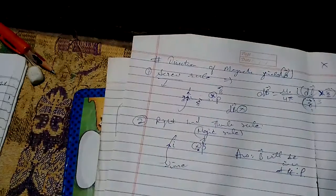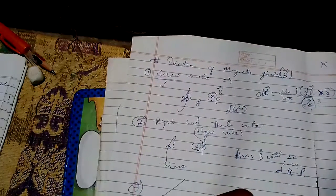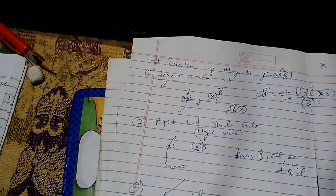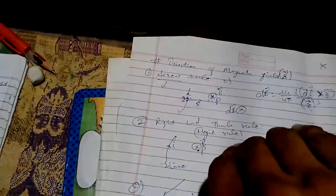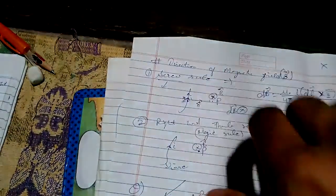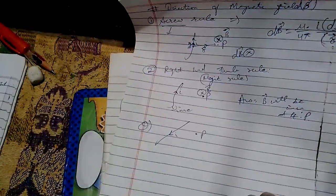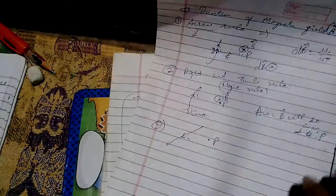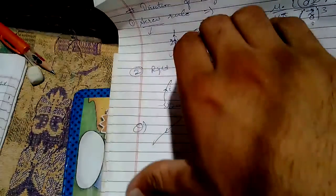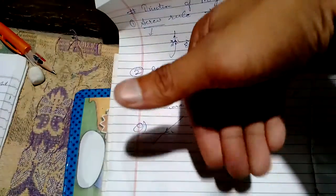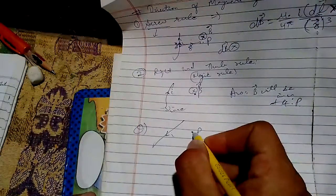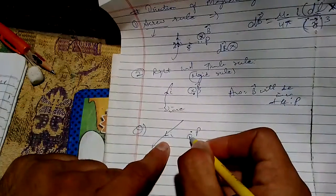Let's try a question. Suppose current I is flowing in this direction and we want to calculate the magnetic field at point P. Current is in this direction and point P is here. Put your thumb in the direction of current and curl your finger towards point P — the magnetic field will be outward. You may confirm this using your hand and thumb. So the answer is outward.